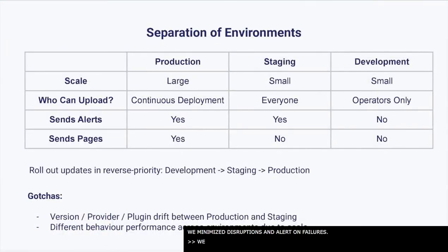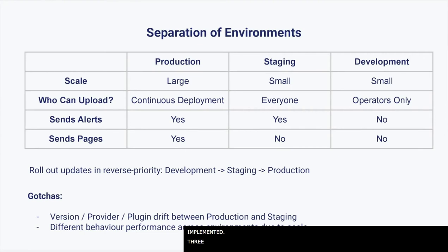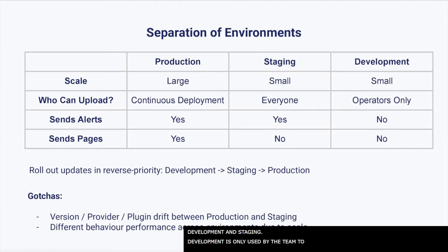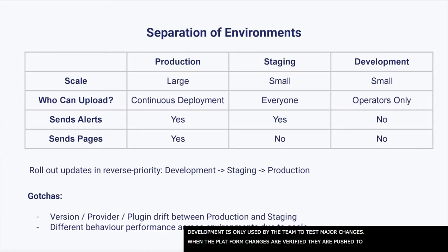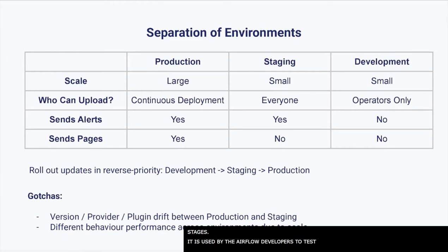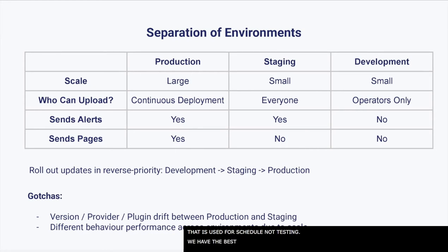The way we've designed our environment lends well to ensuring that changes are fully tested before they're implemented. We have three environments: development, staging, and production. We use GKE for all three environments so access is available to external systems in development and staging. Development is only used by the data platform team to test major changes. Once verified in development, changes are pushed to staging, which is production-like and used by Airflow developers to build and test DAGs. The production environment is only used for scheduled jobs and is not for testing purposes.